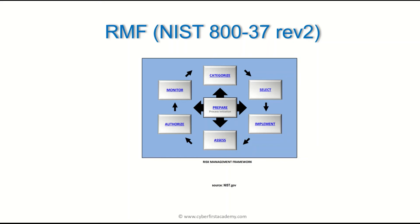The next phase is select. Once you've determined if your system is low, moderate, or high, you decide what type of protection to put in place. A control is something you put in place to reduce risk — a security measure. So in the select phase, you choose your security controls: are you going to put in a firewall? Add complex passwords? Things like that.